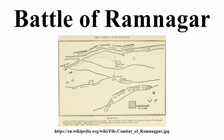On 14 September, Sher Singh rebelled, forcing Whish's force to raise the siege of Multan and retire. Nevertheless, Sher Singh and Mulraj did not join forces. The two leaders conferred at a temple outside the city, where both prayed, and it was agreed that Mulraj would supply some funds from his treasury, while Sher Singh moved north to join his forces with those of his father.